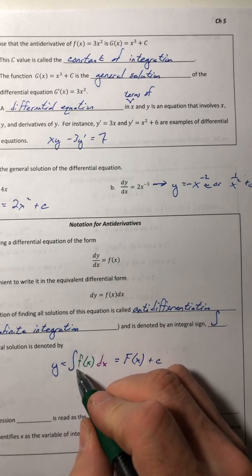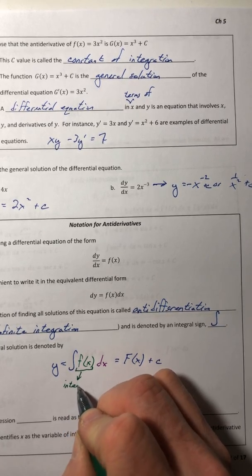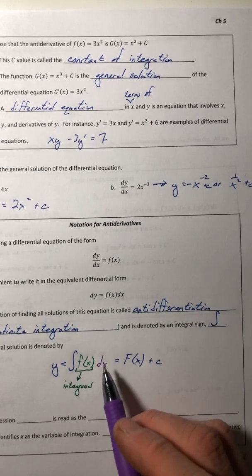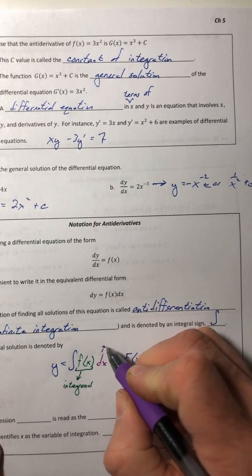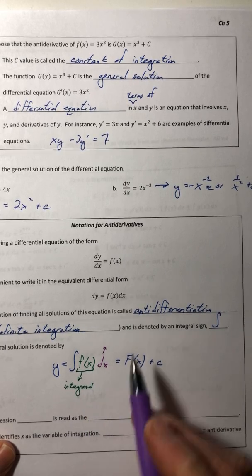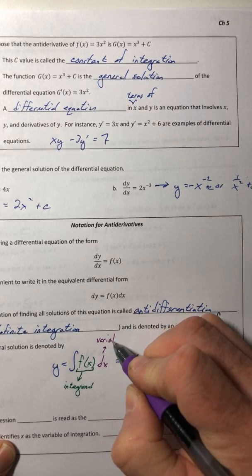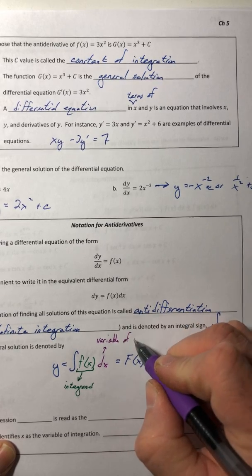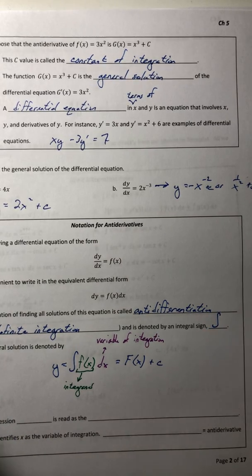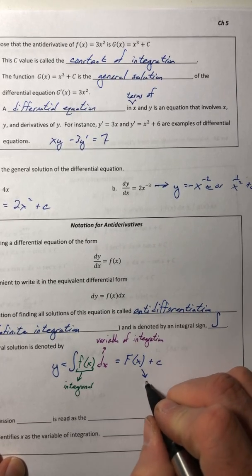So this function that's inside the integral symbol, what that is, that is called the integrand. And this dx thing, what that does, its purpose is primarily to kind of tell you what the variable of integration is. So it's always going to be d something. So the something, that's the variable of integration. And then your answer, whatever you get for that, that's your anti-derivative.